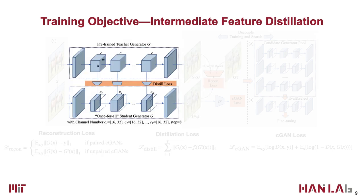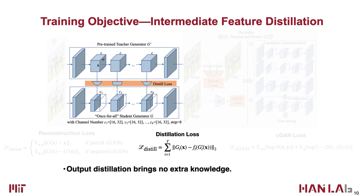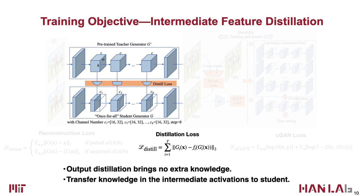In addition, we distill knowledge from the intermediate activations of the teacher generator to the student. Conditional GANs usually output a deterministic image rather than a probabilistic distribution. It is difficult to distill the dark knowledge at the pixel level, since output images generated by the teacher model essentially contain no extra information compared to ground truth target images. Moreover, the intermediate layers contain more channels, provide richer information, and allow the student model to acquire more information.